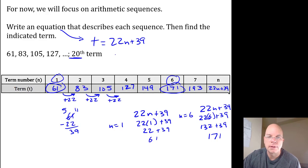And then to find the 20th term, you substitute 20 for n. So 22n plus 39, but n is 20.